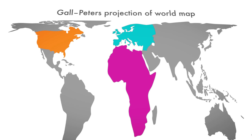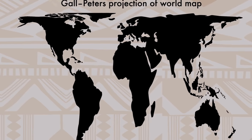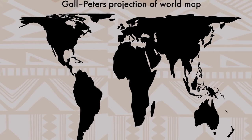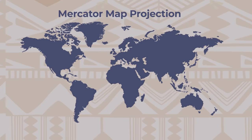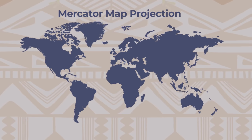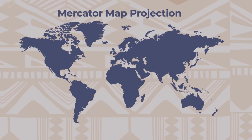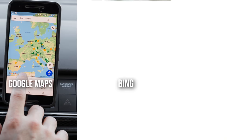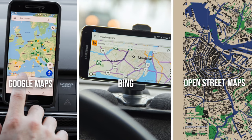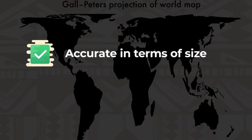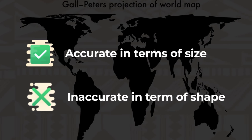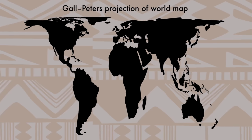In the 1970s, there was a push to make the Gall-Peters projection the standard map as a more accurate alternative to replace Mercator. Though clearly it never caught on, as we still use the 500-year-old Mercator today. Google Maps, Bing, and OpenStreetMap all use the Mercator map as a template, despite its obvious flaws. As with all map projections, Gall-Peters is accurate in terms of size but inaccurate when it comes to other properties, most notably shapes. This projection also has its flaws.